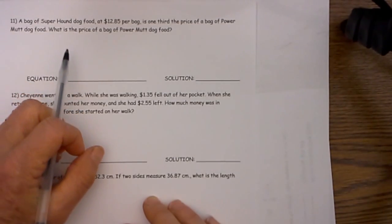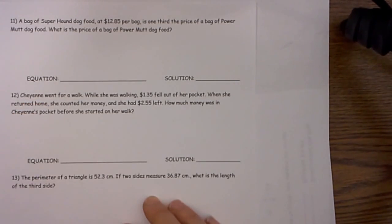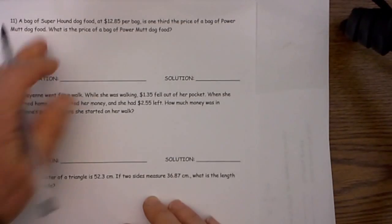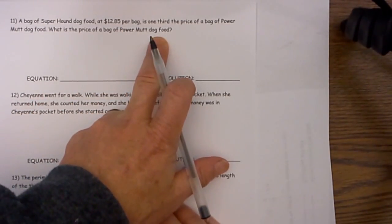A bag of super hound dog food at $12.85 per bag is one third the price of power mutt dog food. What is the price of a bag of power mutt dog food? So let's first set up what the equation is.